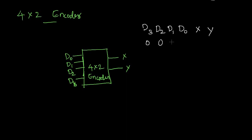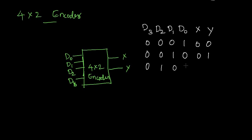First, d0 will be high — at that time x and y both are 0, so the output is 00. Next, when d1 becomes 1, the output will be 01, that is y becomes 1. Next, when d2 becomes 1, the output will be 10. Last, when d3 becomes 1, the output will be 11.